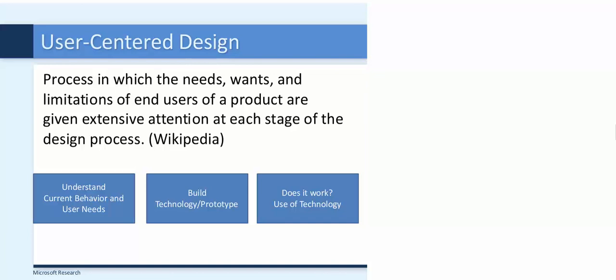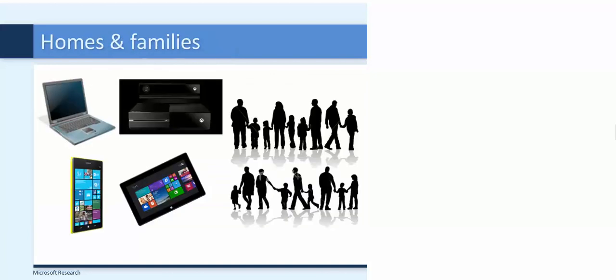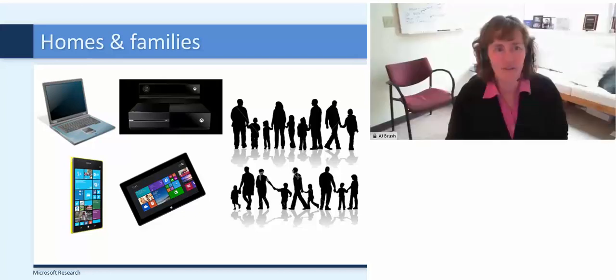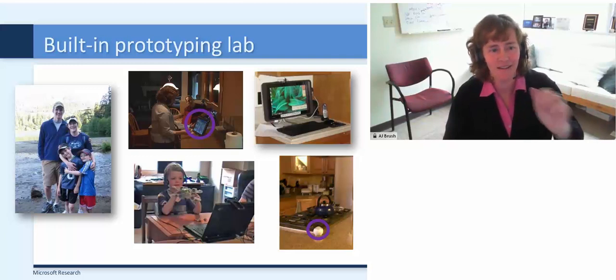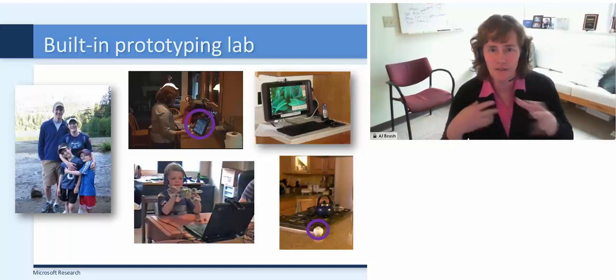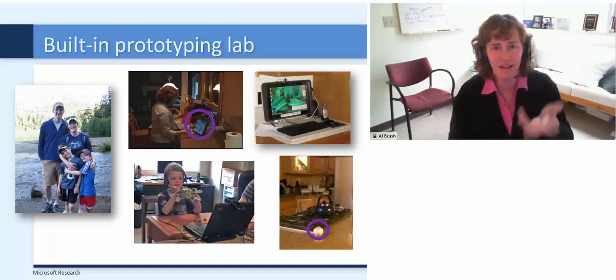These three boxes represent how I do all my projects: first, understanding what people are doing now or pain points around something they're doing; second, building a prototype, which might be out of paper or with code; and third, figuring out whether we built something that actually addresses those needs. I find homes and families fascinating because there are lots of people and lots of different kinds of devices. I always try to show pictures of my family — my son is doing video playdating, which was a project about how video conferencing could be more immersive for children.